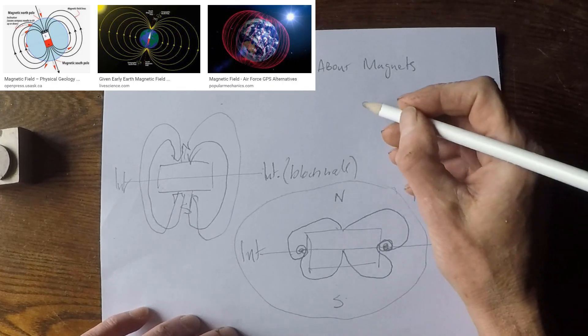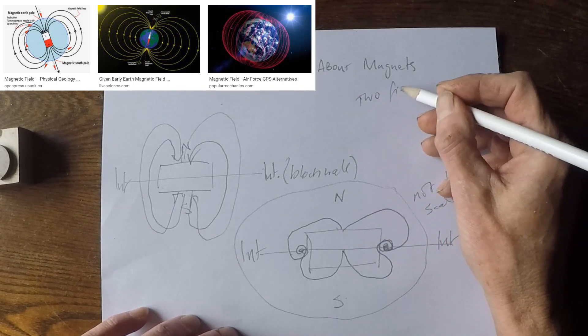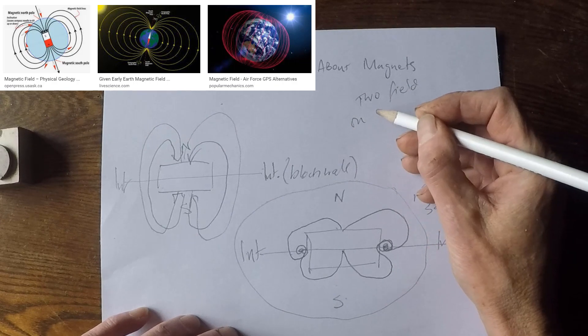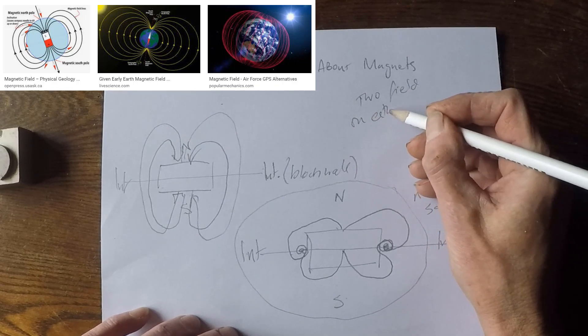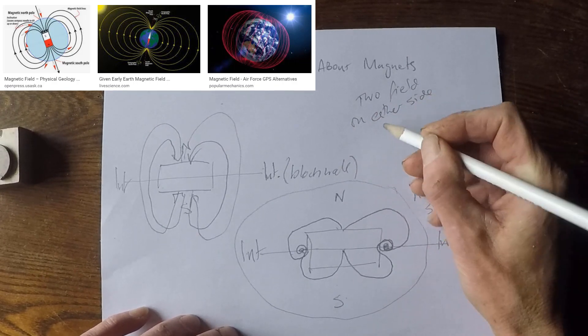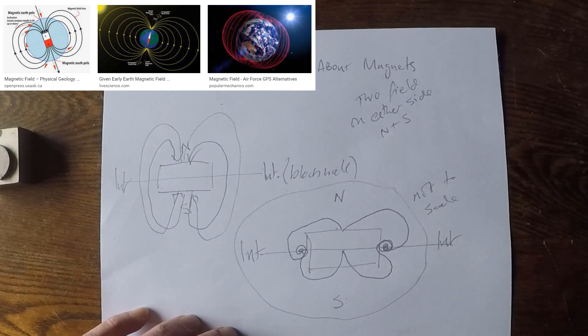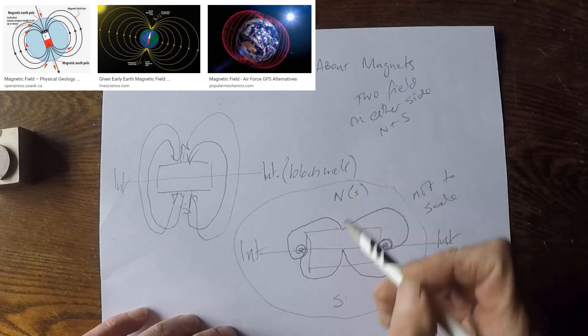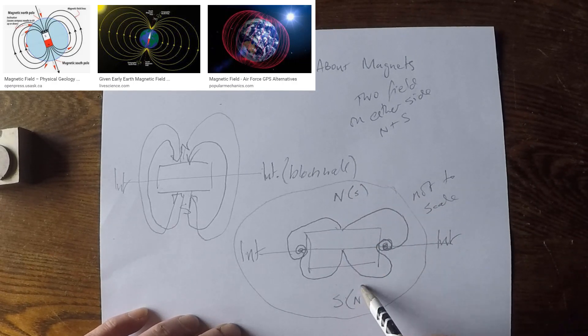I've said there are two fields. Two fields, at least, on either side. North and south. So, this also has a south. And this also has a north.